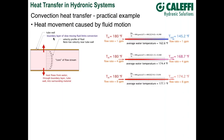Here's an example with fin tube. I took the same piece of fin tube with an inlet temperature of 180°F and a flow rate of 1 GPM, modeled a specific length of fin tube, and got an outlet temperature of 145°F. The average water temperature is 162.6°F, and we get a heat transfer rate of about 16,980 BTUs per hour.